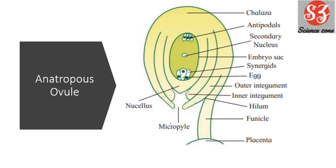Next is Anatropous Ovule. This is the ovule plant. Draw a neat labelled diagram of ovule — so this diagram you will draw.